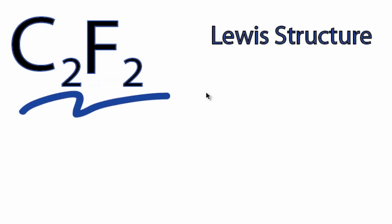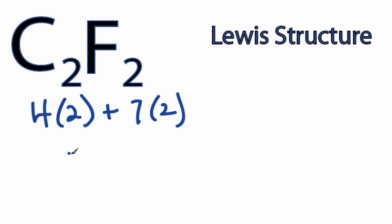For the C2F2 Lewis structure, we have four valence electrons for carbon, but we have two carbons, so we'll multiply that by two. Seven for fluorine, and then we have two fluorines for a total of 22 valence electrons for the C2F2 Lewis structure.